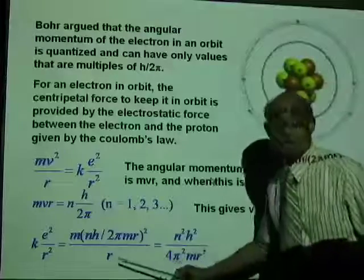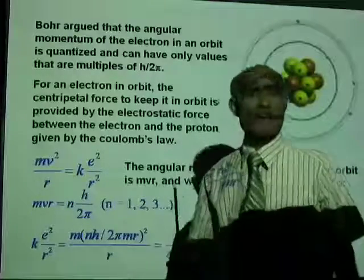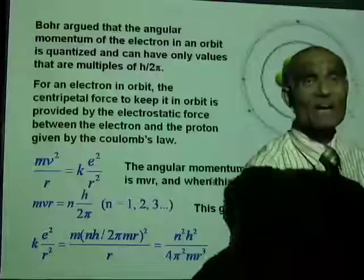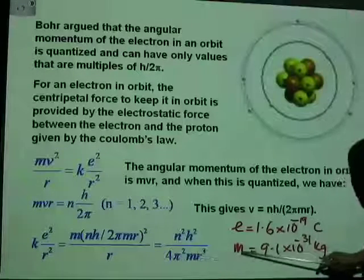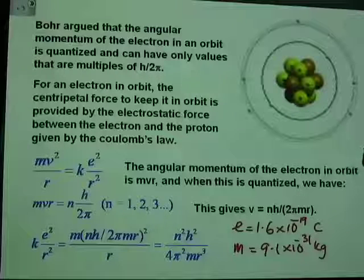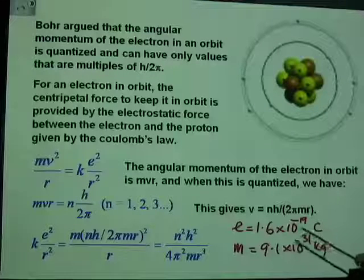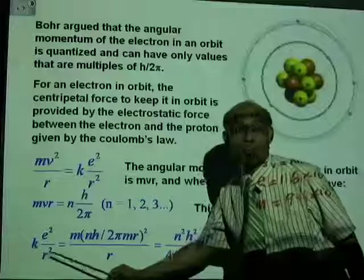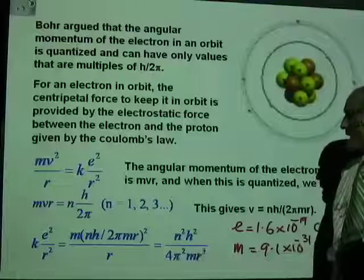I hope you know what all these quantities are. E is the charge of an electron. The mass of the electron is 9.1 times 10 to the negative 31 kilogram. The charge on the electron is 1.6 times 10 to the negative 19 coulombs. So you have k e squared over r squared, where r is the radius of the orbital electron, equal to n squared h squared over 4 pi squared m r cubed.